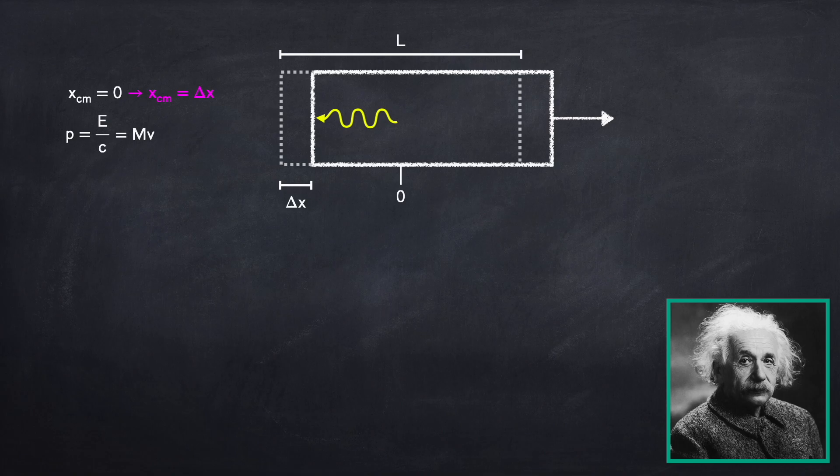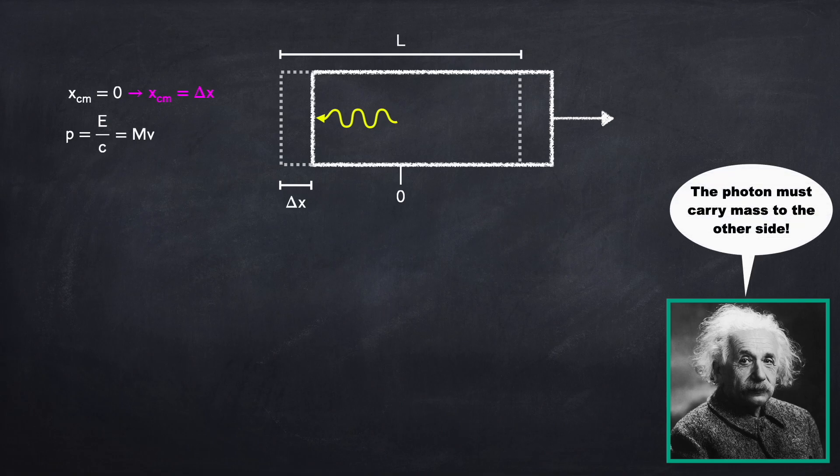Well, in absence of external forces, this cannot happen. So Einstein reasoned, it must be that the photon carries some mass to the other side of the box, in order to ensure that the center of mass position doesn't change.